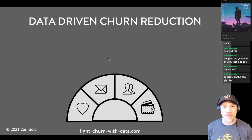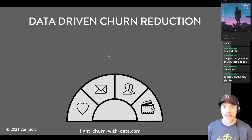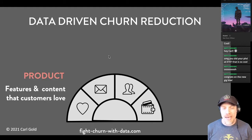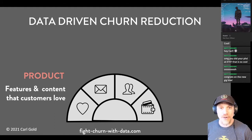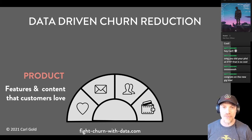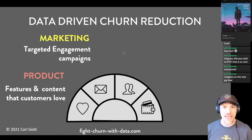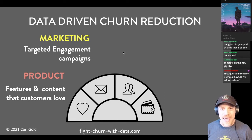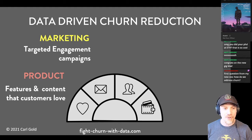What is actionable for churn? It means taking steps to reduce your churn using your data. One example is making a great product — you can use your data to make a great product without surveying your users. You can also use data to power your marketing and target messages directly at the customers who want them.